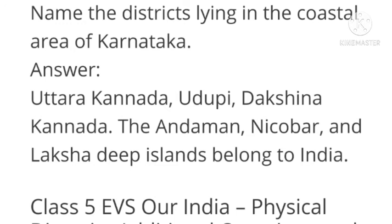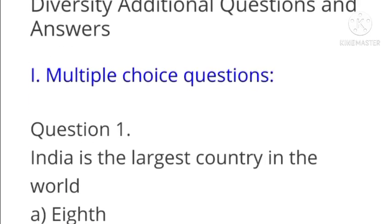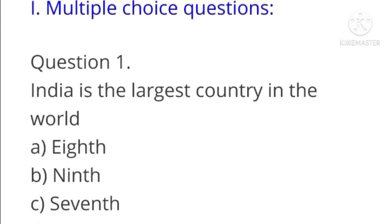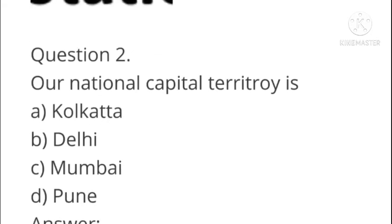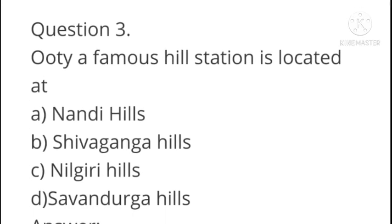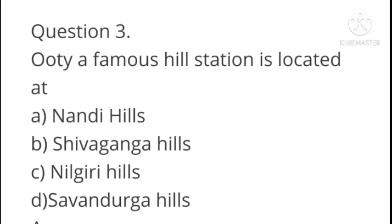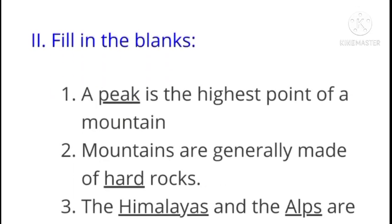Multiple choice questions. Question 1: India is the largest country — is it the eighth, ninth, seventh, or sixth largest? Answer: Seventh. Next: Our national capital territory is — Kolkata, Delhi, Mumbai, or Pune? Answer: Delhi. Next: Ooty, a famous hill station, is located at — Nandi Hills, Shivaganga Hills, Nilgiri Hills, or Savandurga Hills? Answer: Nilgiri Hills.